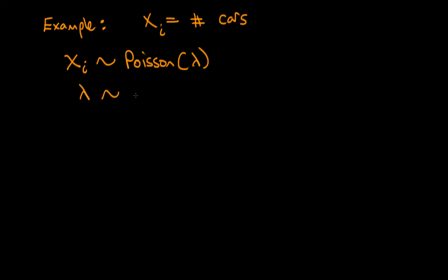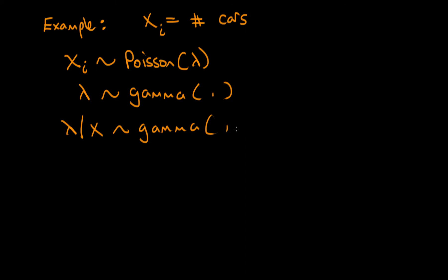If we assume that lambda comes from a gamma distribution, then because the gamma distribution is conjugate to the Poisson, we can calculate the posterior, which will also be a gamma distribution just with different parameters to the prior. None of this example hinges on having a conjugate prior — it just makes the math a bit easier to follow and hopefully makes it easier to understand what I'm doing in the simulations.